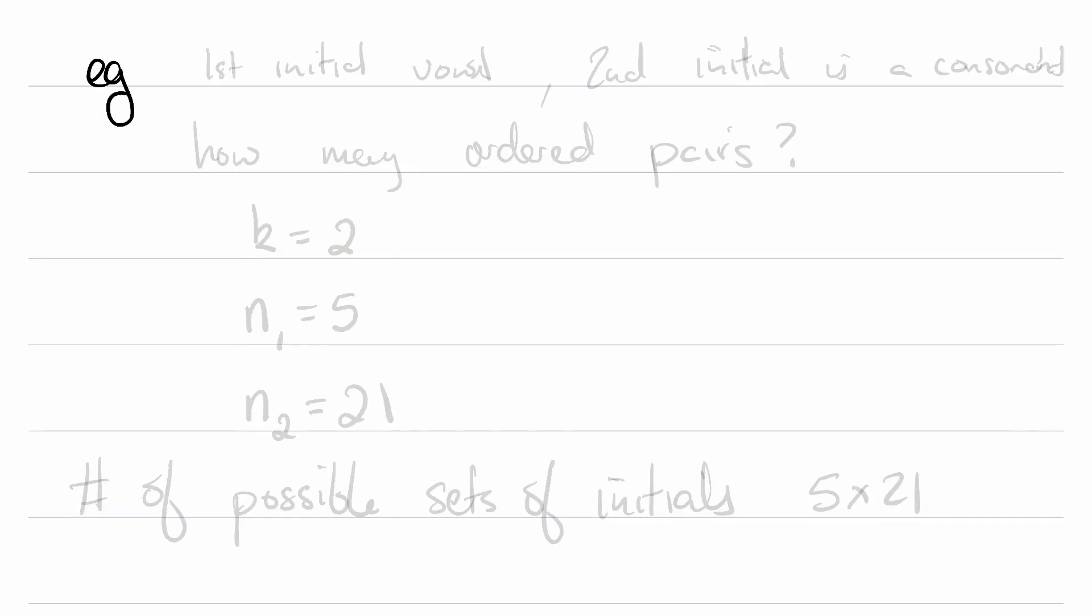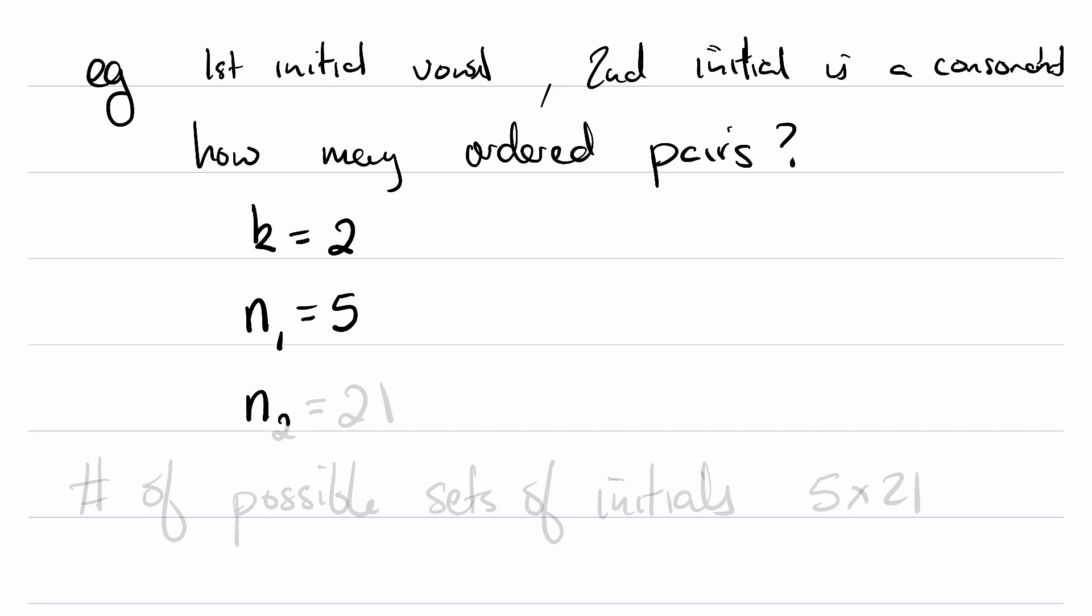This would be helped by some examples. Just to recover the example that we talked about: if the first initial is a vowel and the second initial is a consonant, how many ordered pairs, as in how many sets of initials? Well, what's the length of the list? 2. So k equals 2. How many choices do you have for the first of the ordered pair, the first initial? 5. How many choices do you have for the second initial, the consonant? 21. So the number of possible sets of initials, by the multiplication principle, is 5 by 21.